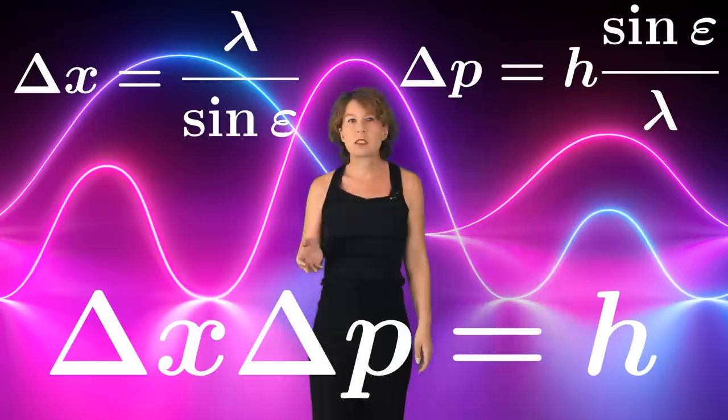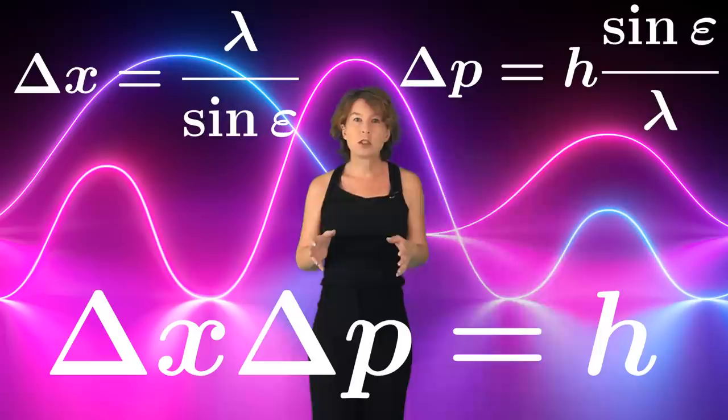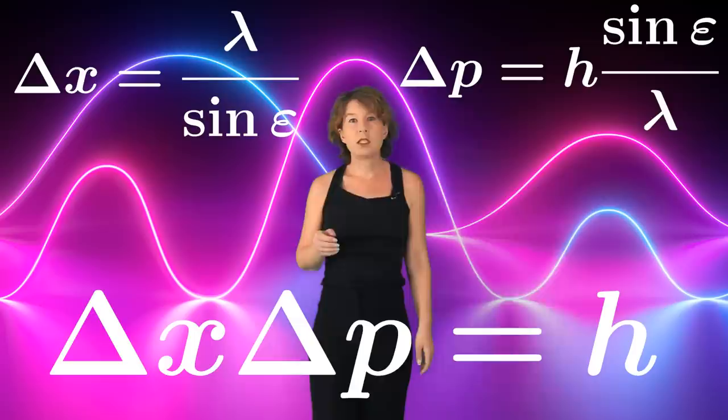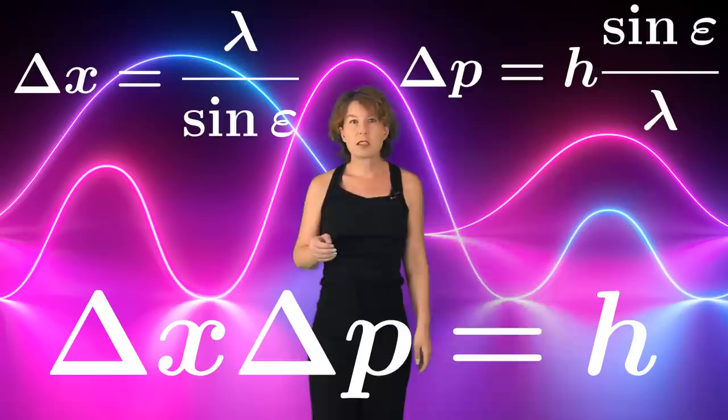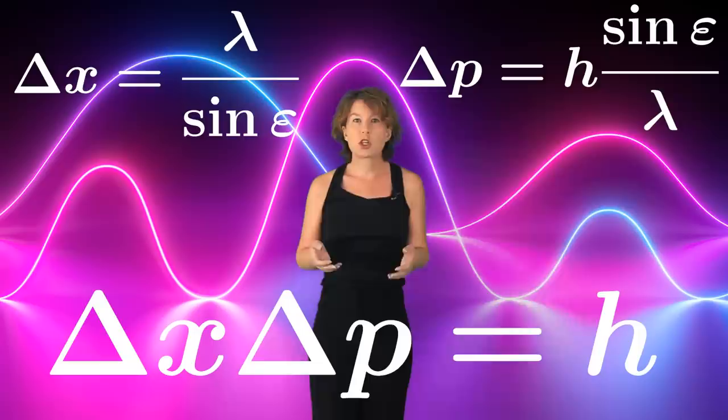The more you know about the position of the particle, the less you know about the momentum and the other way around. We know today that Heisenberg's argument for microscopes is not quite correct, but remarkably enough the conclusion is correct. Indeed, this uncertainty has nothing to do with microscopes in particular. Heisenberg's uncertainty is far more than that, it's a general property of nature. And it does not only hold for position and momenta, but for many other pairs of quantities.